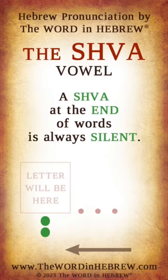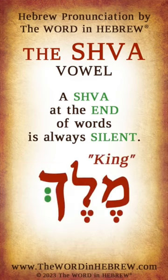A sheva at the end of words is always silent — in that case, we will only pronounce the base sound of that letter. Let's see an example with the word for king. We can see that we have a sheva at the end of the word, but as always, we will start reading from right to left.